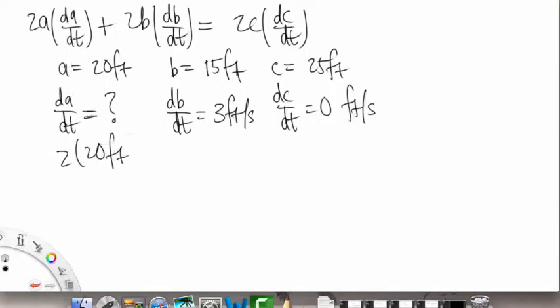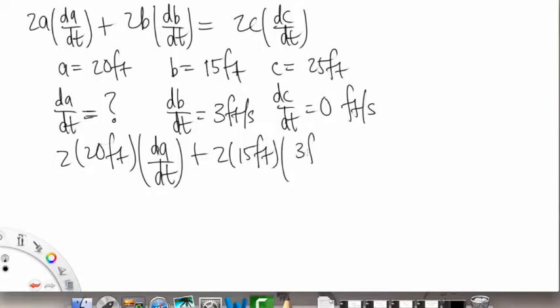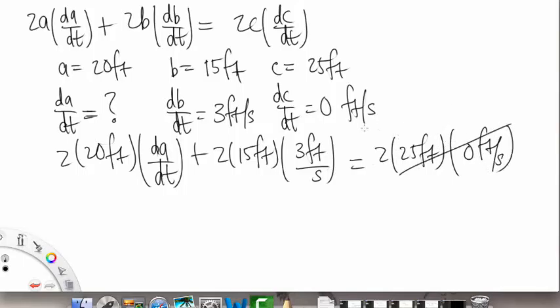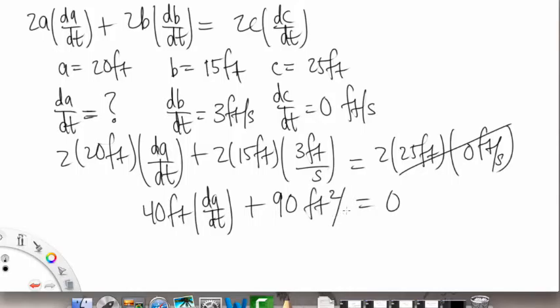So let's plug these values in. So we have 2 times 20 feet, and then times our dA/dt, that's our one unknown, that's our final unknown, plus 2 times B, so that's 15 feet, and then times 3 feet per second, is equal to 2C, so that's 25 feet, and then times 0 feet per second. So the right side, that's just going to become a 0. So we have equal 0, and then we have 40 feet times dA/dt, and then plus 2 times 3 is 6, times 15 is 90, and this will be feet squared per second.